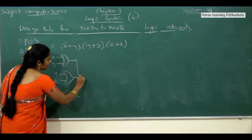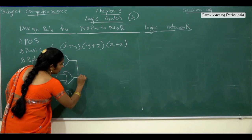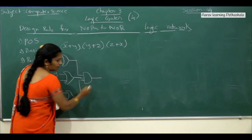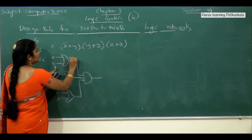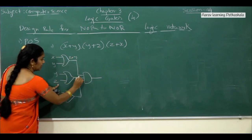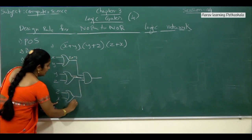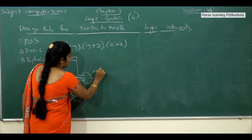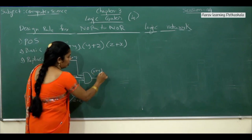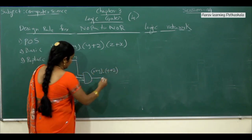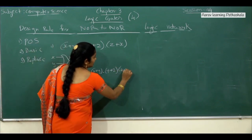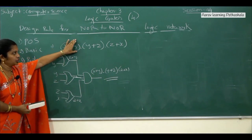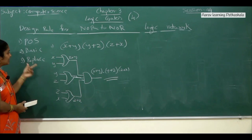All three OR gate outputs are combined with a product operator, so connect them with an AND gate — the D-shape. The output is (X + Y) dot (Y + Z) dot (Z + X). The second step is complete — we have written all the expressions using basic gate symbols.